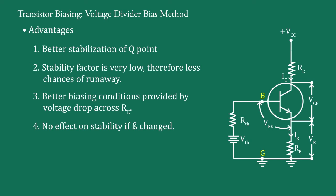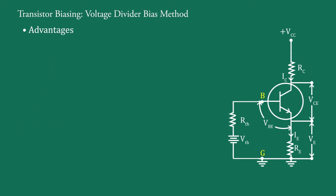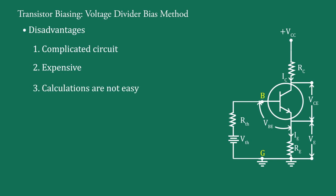So, these four are the advantages of this biasing circuit. Now, disadvantages. One, complicated circuit as compared to other biasing circuits. Two, expensive. It is expensive because it needs more components. Three, calculations are not easy. We found in the analysis of the circuit that it requires many calculations. So, it is also a disadvantage. So, there are three disadvantages of the circuit.